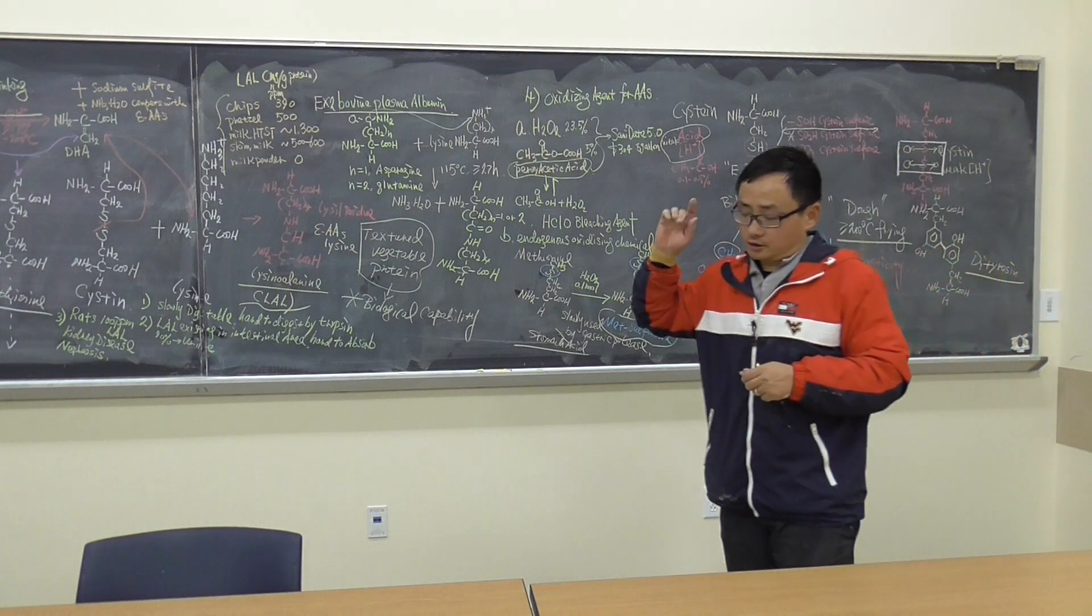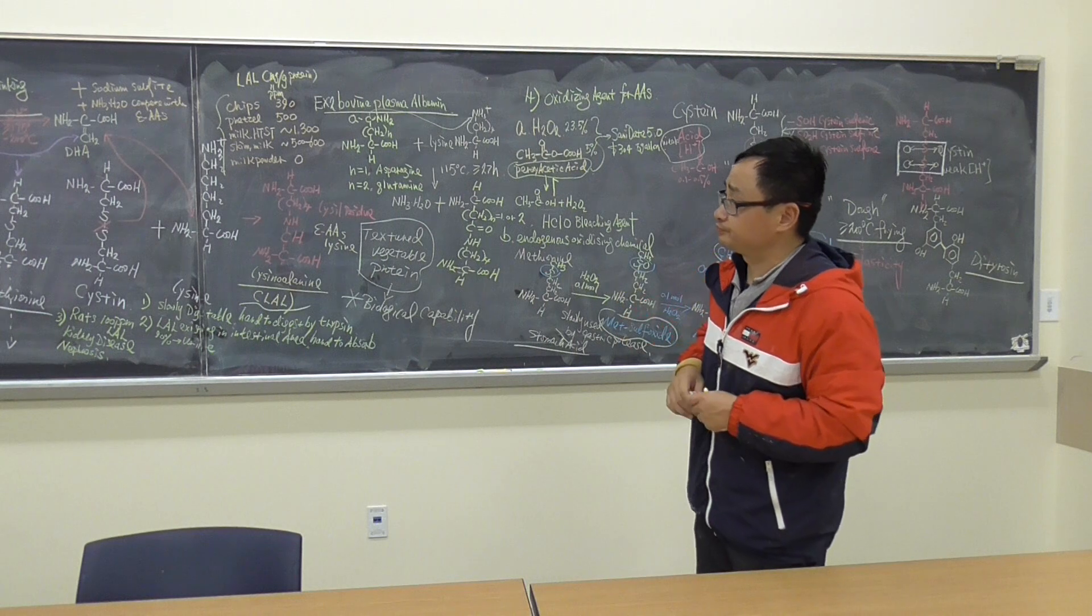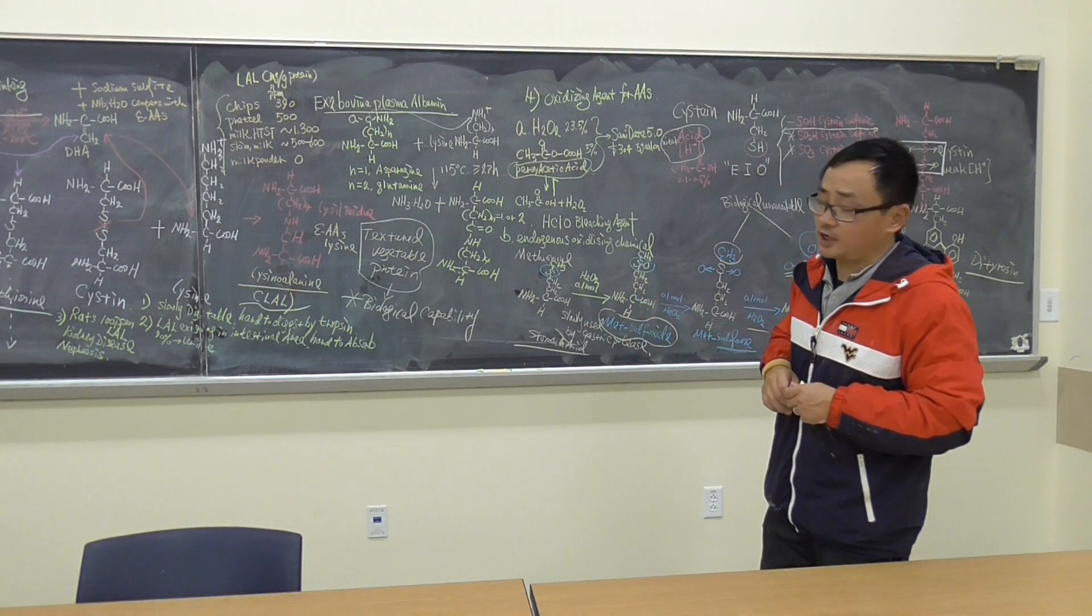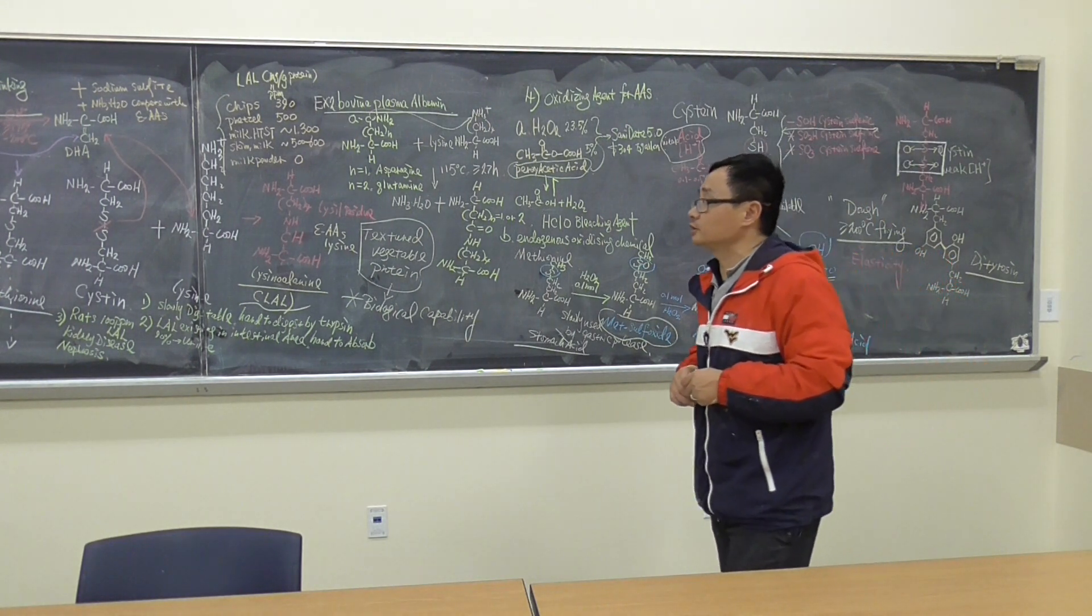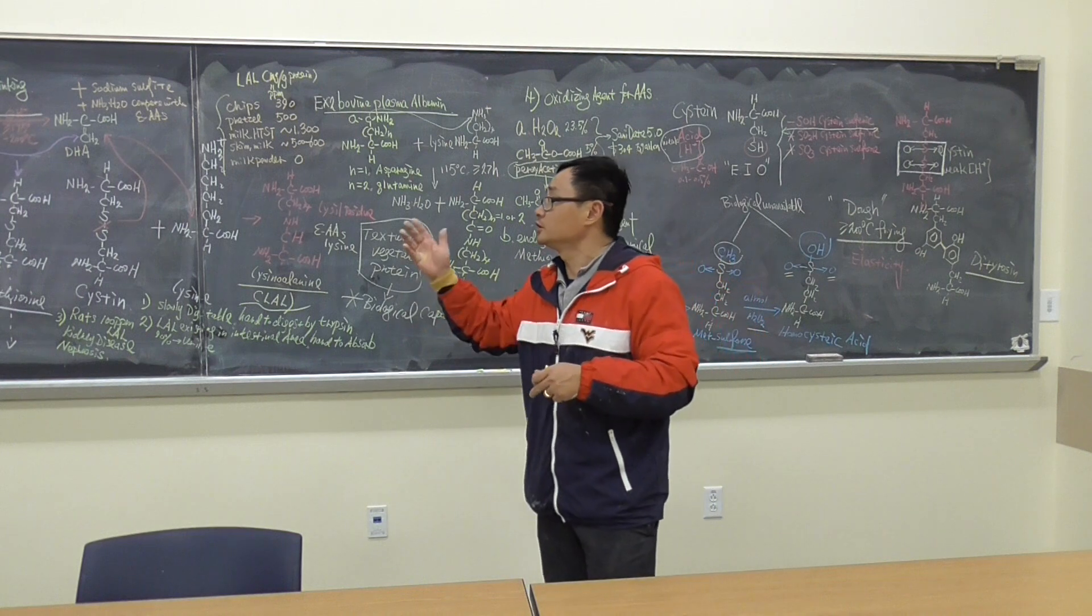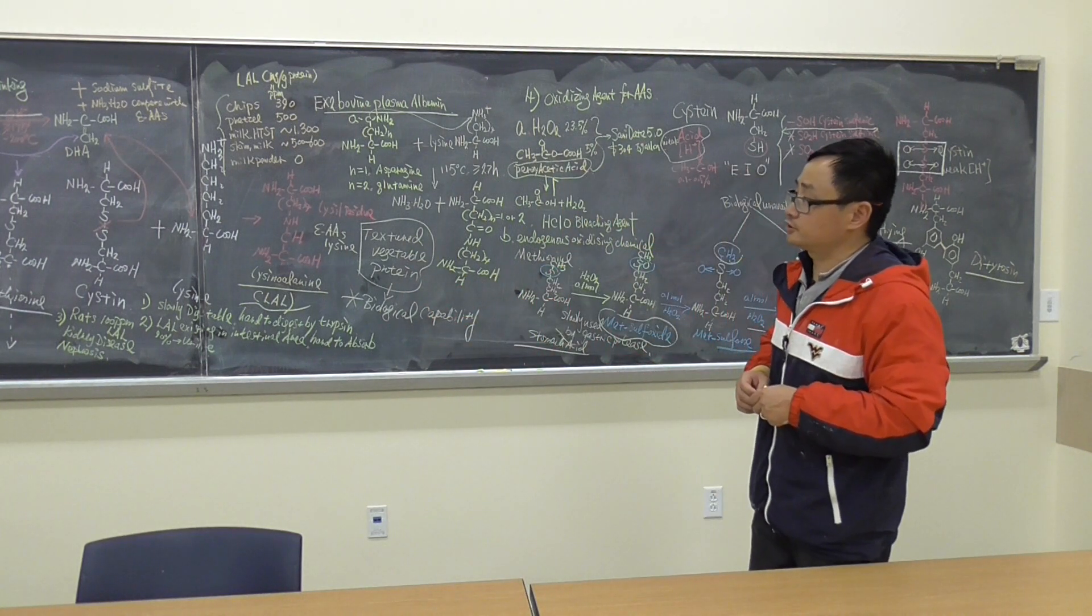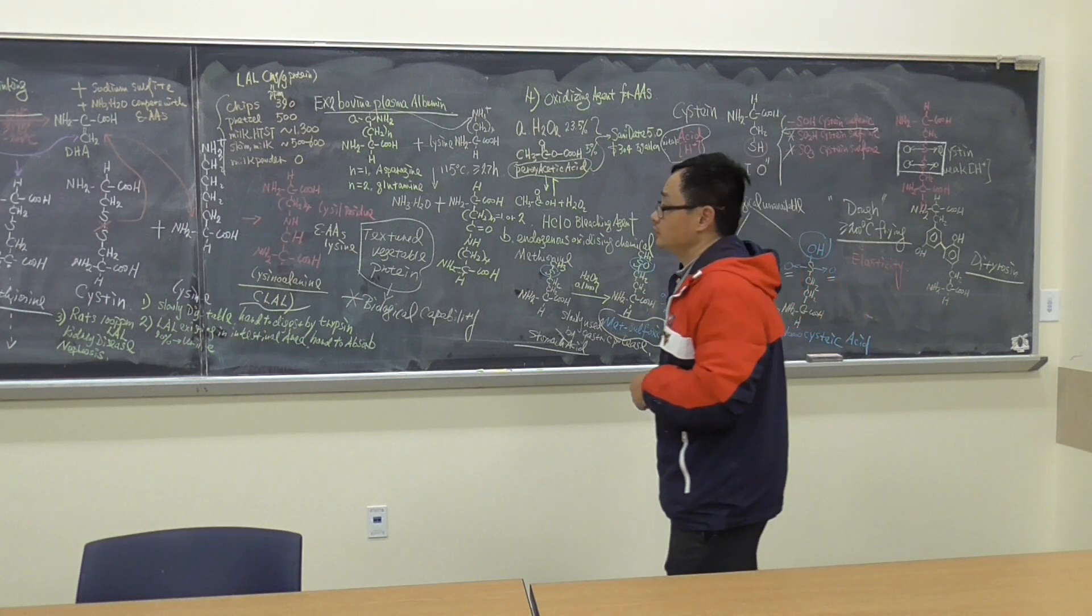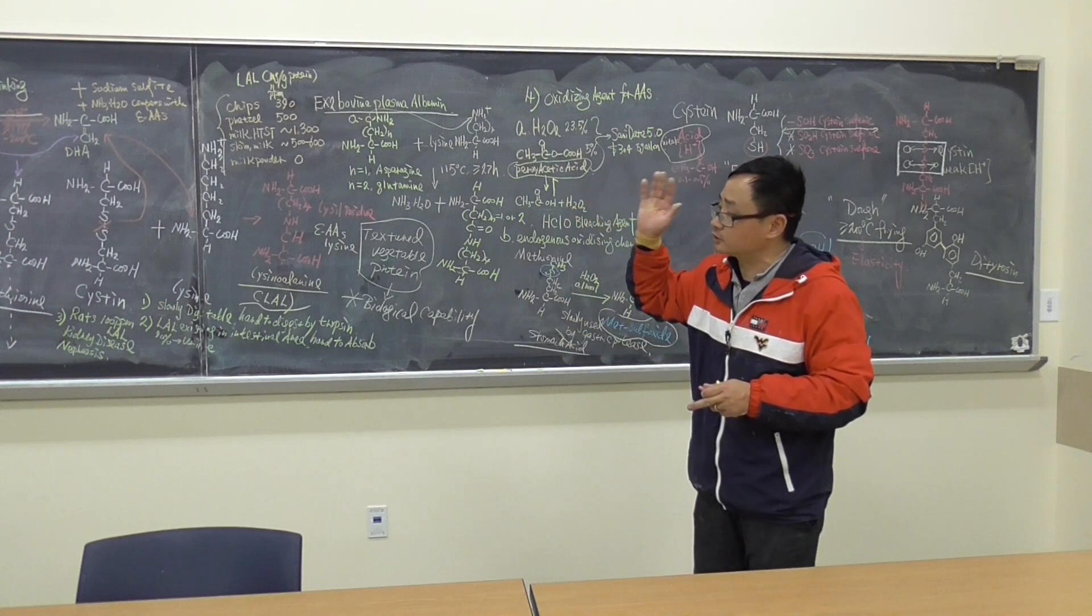We're using the ninhydrin to test free amino acids. Then, in food products, very often we have a weak alkaline solution. With extended heating, we'll generate a reaction called racemization, we'll generate DHA, which is dehydroalanine.